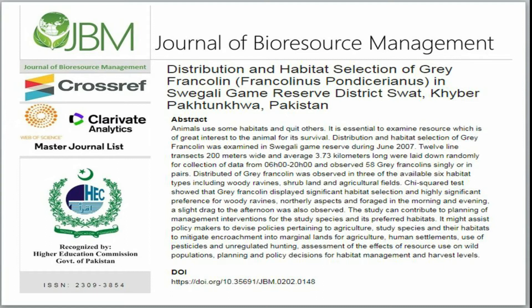Twelve line transects, 200 meters wide and averaging 3.73 kilometers long, were laid down randomly for data collection from 06:00 to 20:00 hours, and 58 Gray Francolins were observed singly or in pairs.